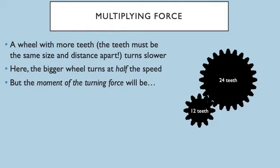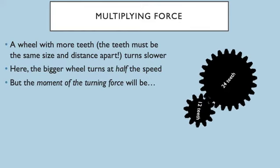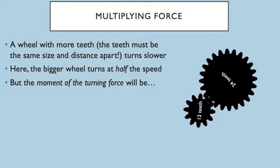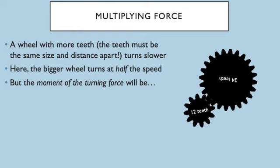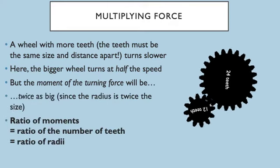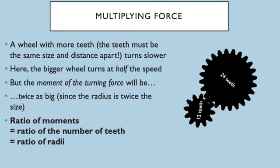And as I said, we can use these to multiply a force. A wheel with more teeth—the teeth must be the same size and distance apart so they can lock in—turns slower. Here the bigger wheel turns at half the speed, but the moment of the turning force will be... what do you reckon? You can see that the little one, the 12-toothed one, is moving around twice as fast as the 24-toothed one. So what do you think the moment will be? Yes, here the moment is going to be twice as big since the radius is twice the size.